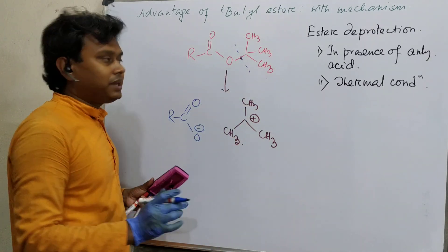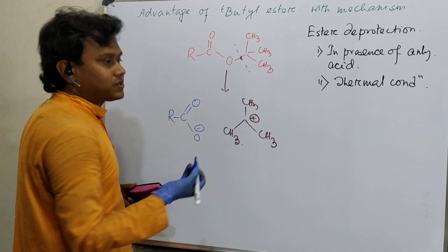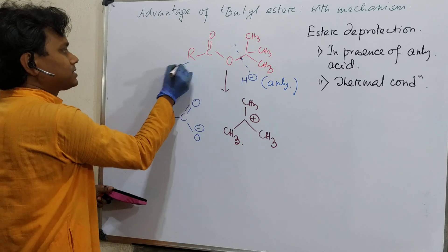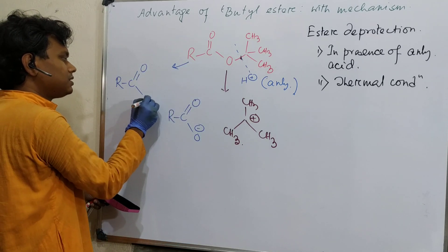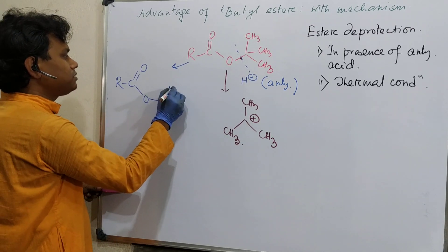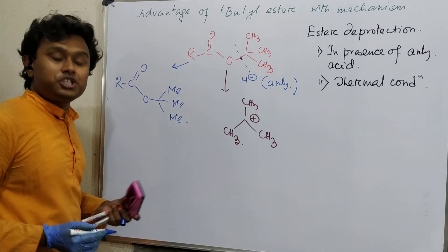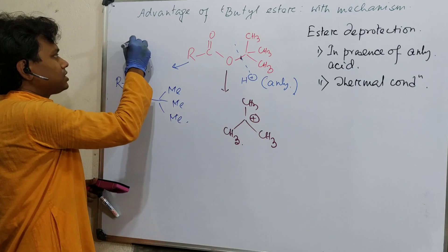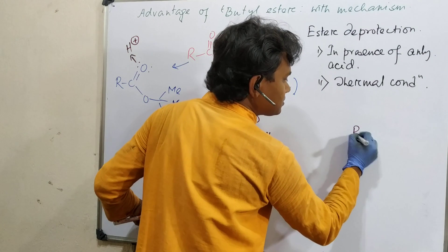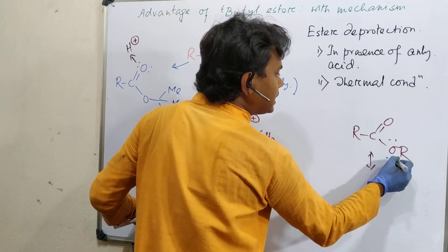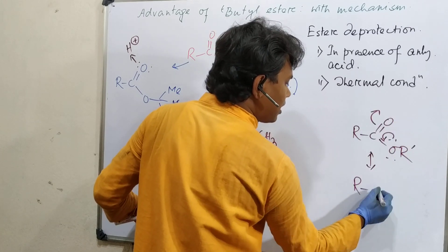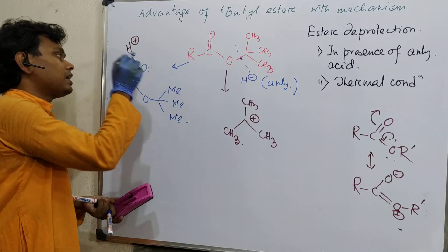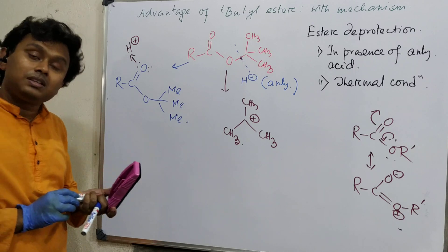If you take an anhydrous strong acid like sulfuric acid — meaning H+ anhydrous — the first step is protonation. Which oxygen gets protonated? The acyl oxygen is protonated. Why? Because if you examine the canonical forms of the ester, drawing R-C(=O)-O-R', this clearly explains why the acyl oxygen is protonated. So, this oxygen is protonated.